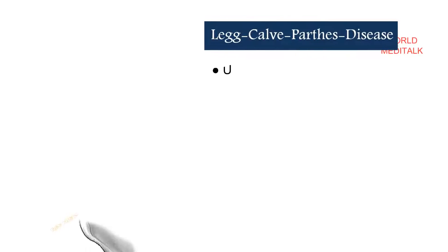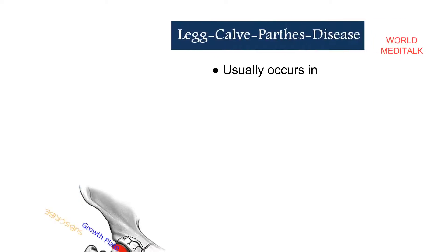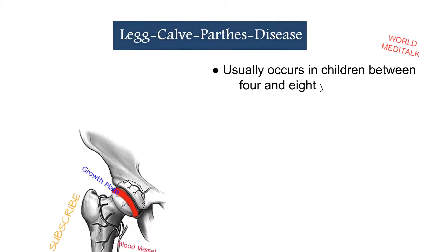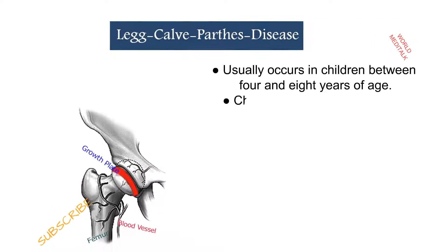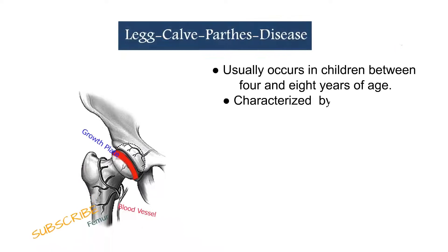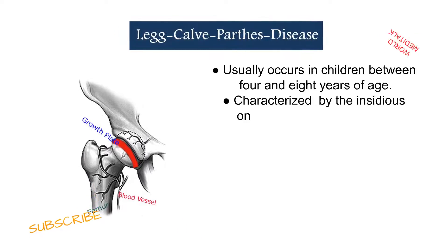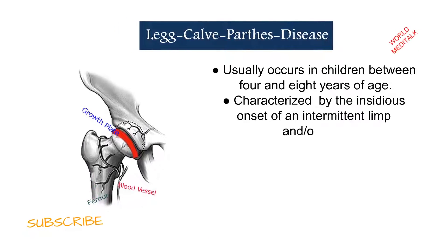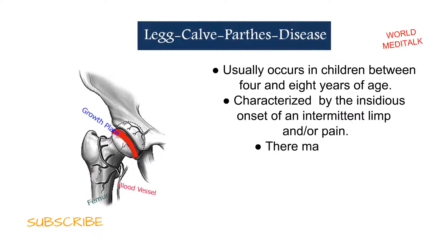Today's topic is Legg-Calvé-Perthes disease. It usually occurs in children between 4 and 8 years of age, characterized by the insidious onset of an intermittent limp and/or pain.